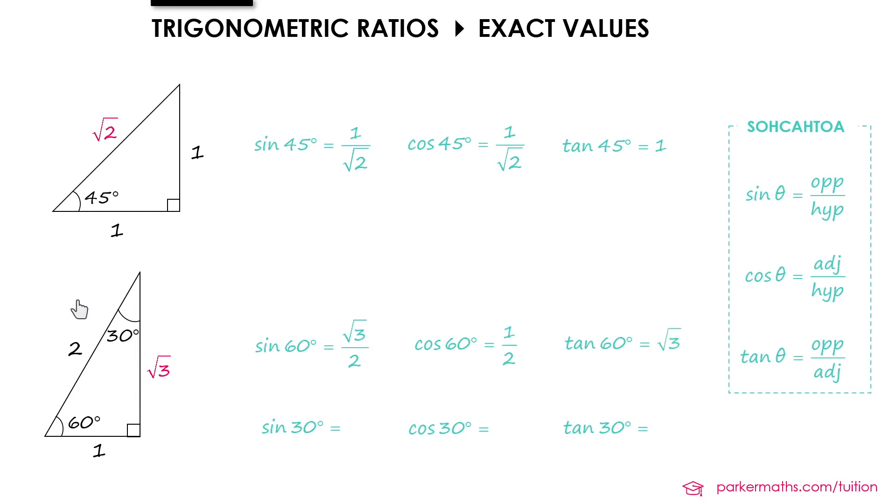And then sine 30 we're working with the other angle this time so the opposite becomes the 1. So opposite over hypotenuse is a half. Cos 30 we're going to do root 3 over 2. And then tan 30 opposite over adjacent this time is 1 over root 3.